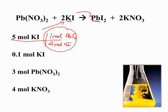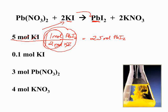This is called the mole ratio, and we only need the mole ratio between the two substances we're interested in. The moles of potassium iodide cancel, leaving us with the moles of lead 2 iodide. Looking at our mole ratio, which is 1 to 2, we can see that from our five moles of potassium iodide we would produce 2.5 moles of lead 2 iodide — half as much product.